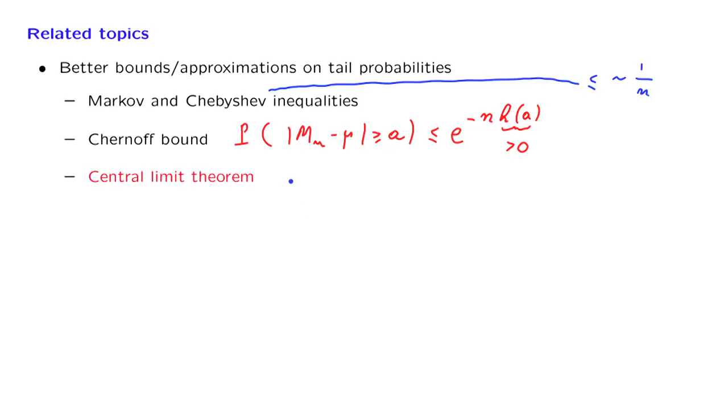Very loosely speaking, the central limit theorem tells us that the random variable m sub n, which is the sample mean,